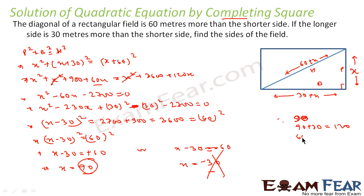So the shorter side is 90 m. The next side is x + 30 = 90 + 30 = 120 m. The diagonal is 60 + x = 60 + 90 = 150 m. So the sides are 90, 120, and the diagonal is 150. We used the Pythagorean theorem, formed the equation, and used completing the square to find the solution.